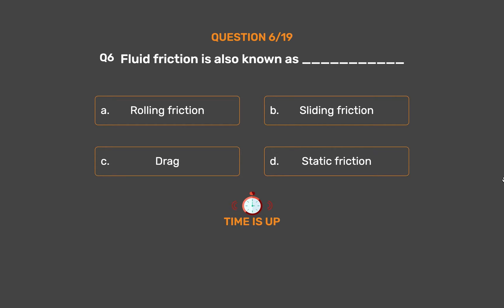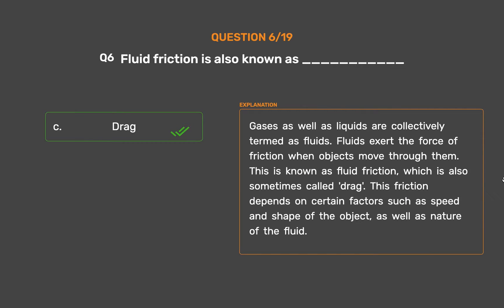The correct answer is Option C: Drag. Gases as well as liquids are collectively termed as fluids. Fluids exert the force of friction when objects move through them — this is known as fluid friction, which is also sometimes called drag. This friction depends on factors such as speed and shape of the object, as well as the nature of the fluid.